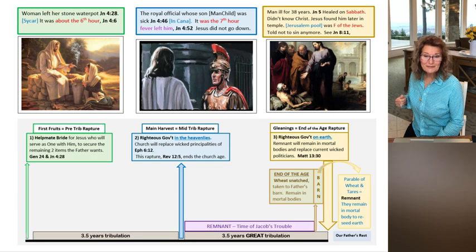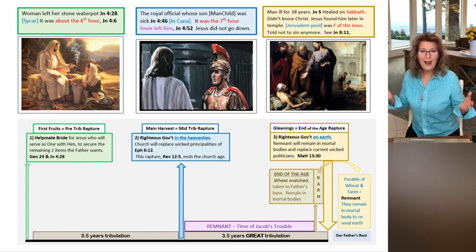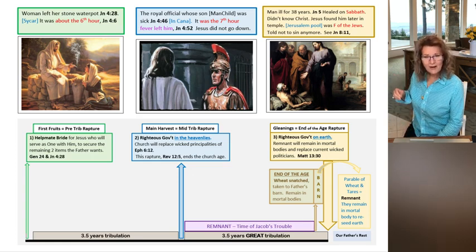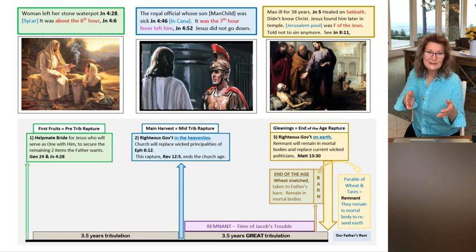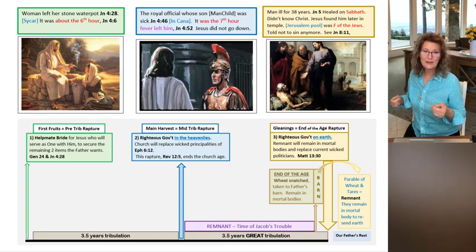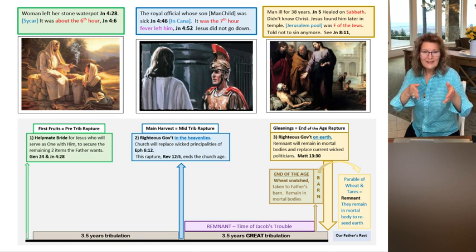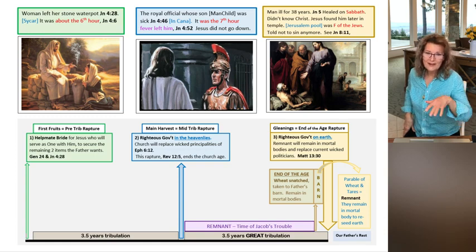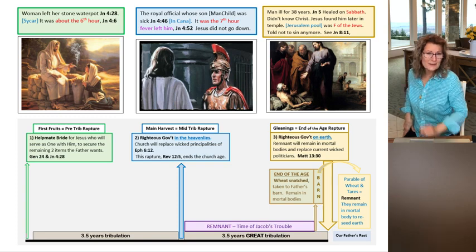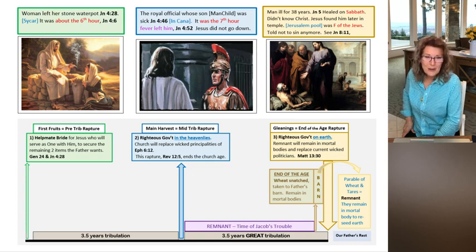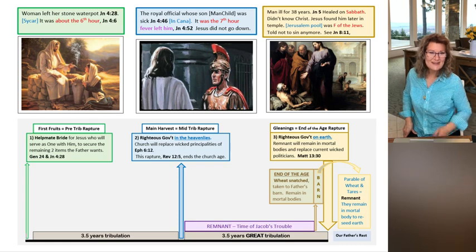That generation believed the other 10 spies who gave a negative report. They admitted the land is beautiful, full of produce, but said there are giants there—we look like grasshoppers in their sight. That was true. God's intent was to send Israel into the promised land and replace the giants in Canaan, just like the remnant is going to replace the wicked rulers governing earth right now. Don't be discouraged about this global government—they're going to be replaced by the remnant, the mortal remnant.